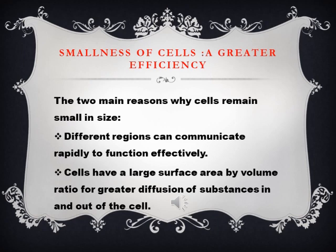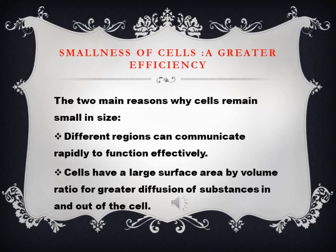Students, the next topic is a very important one: smallness of cells means greater efficiency. Because of the small size of cells, their efficiency is highly increased. The first main reason why cells remain small is that different regions of the cell can communicate with each other rapidly for effective cell-to-cell functioning. If the cell is very big, material moving from one part to another will take more time. But if a cell is very small, absorbed materials can be easily transferred from one part of the cell to the other.